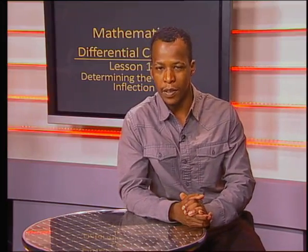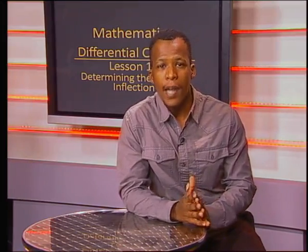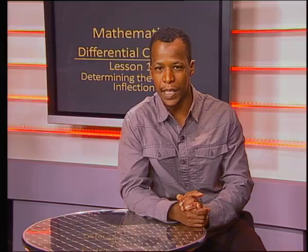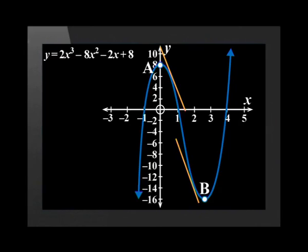The point of inflection lies between the two stationary points. To understand it more, let's look at the tangents that can be drawn between points A and B. There are two tangents drawn here, and both of them have negative gradients. This means that the function is decreasing between points A and B.